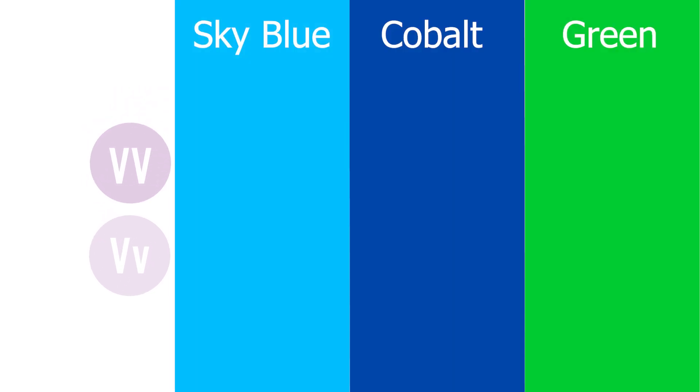Now look what happens when I move them between the sky blue, cobalt and green. You can see where they show violet and where they don't.